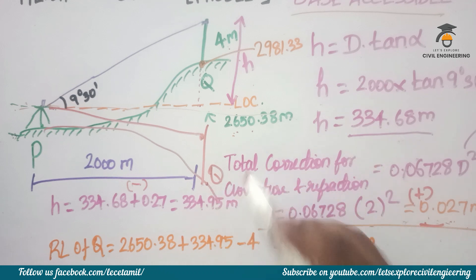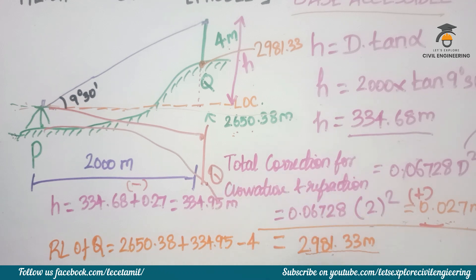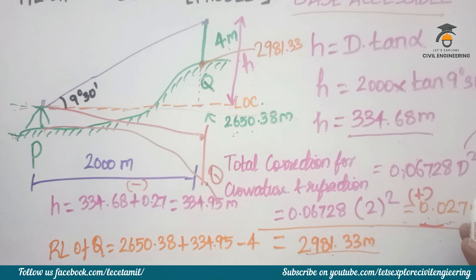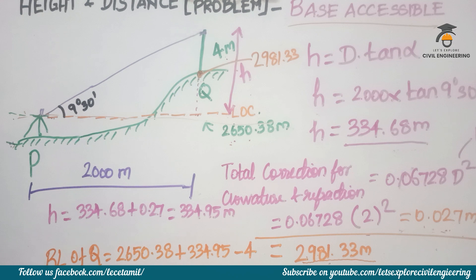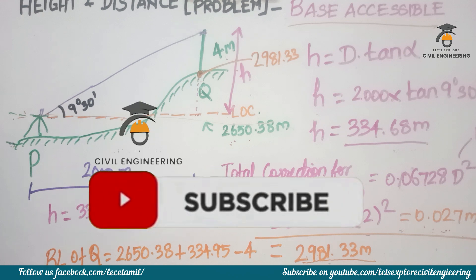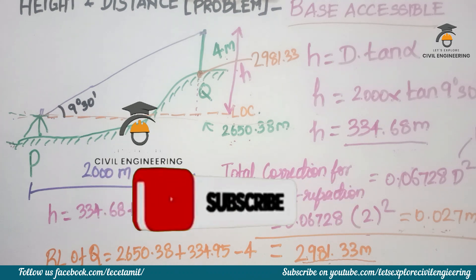In the case of an angle of depression, the curvature correction value becomes negative. This covers the base accessible case. For base inaccessible problems with single-plane or double-plane methods, refer to our other surveying videos. Please subscribe and share. Thank you.